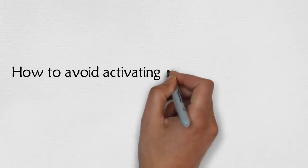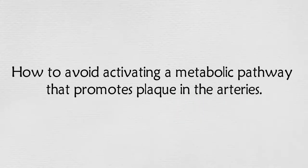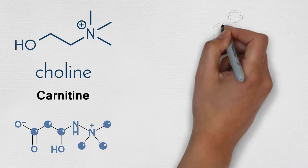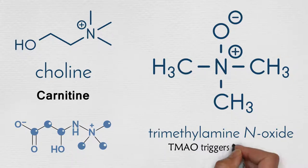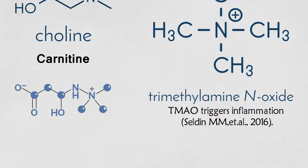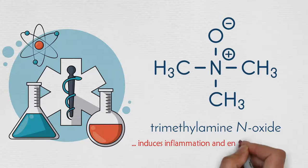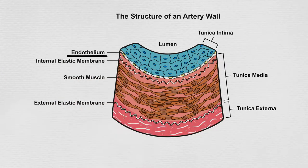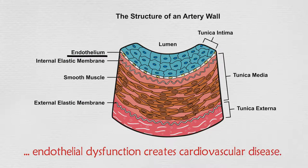When choline and carnitine are metabolized by intestinal bacteria, a metabolite called Trimethylamine N-oxide (TMAO) can be formed. TMAO triggers inflammation. Other researchers have also showed that TMAO induces inflammation and endothelial dysfunction. The endothelium is the inner lining of the blood vessels, and endothelial dysfunction creates cardiovascular disease.